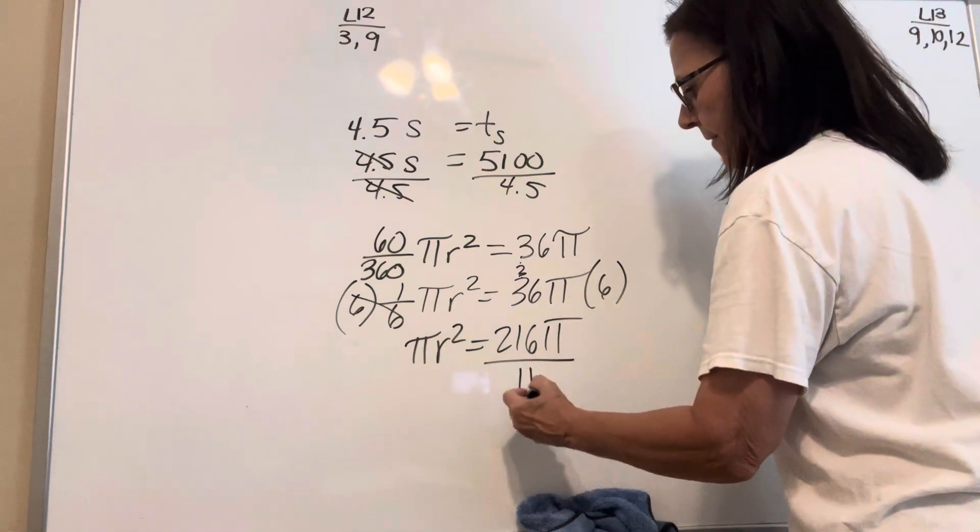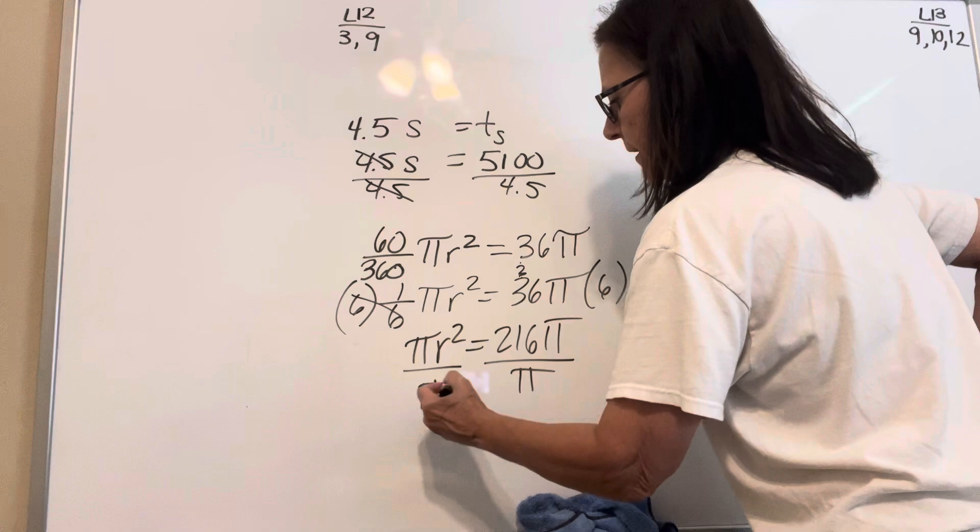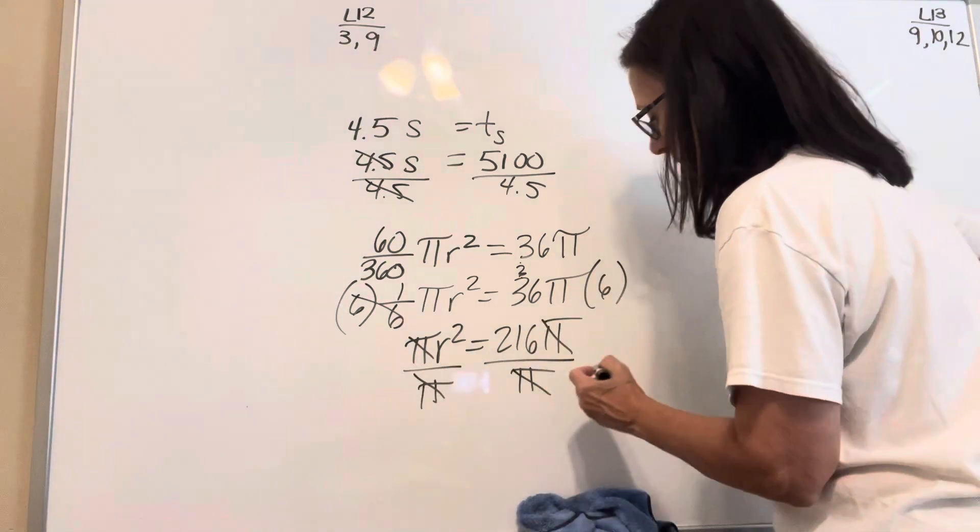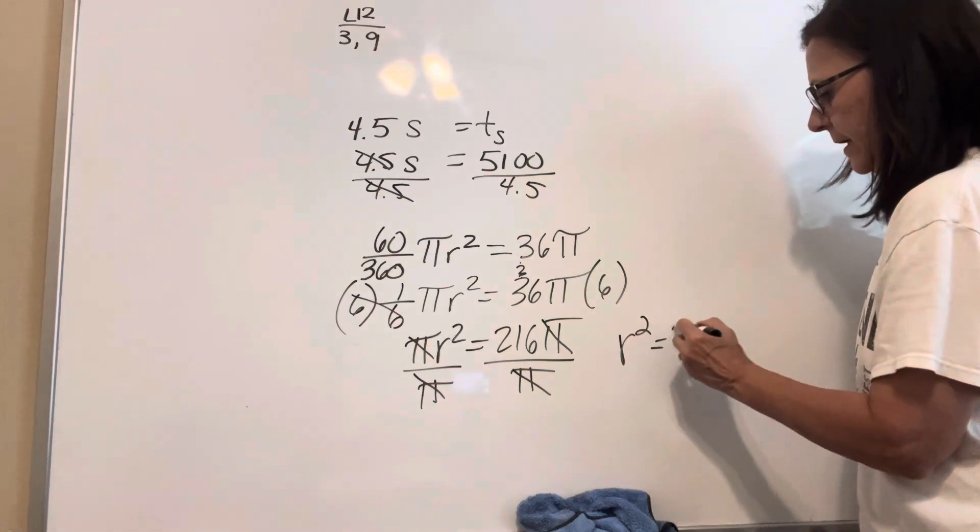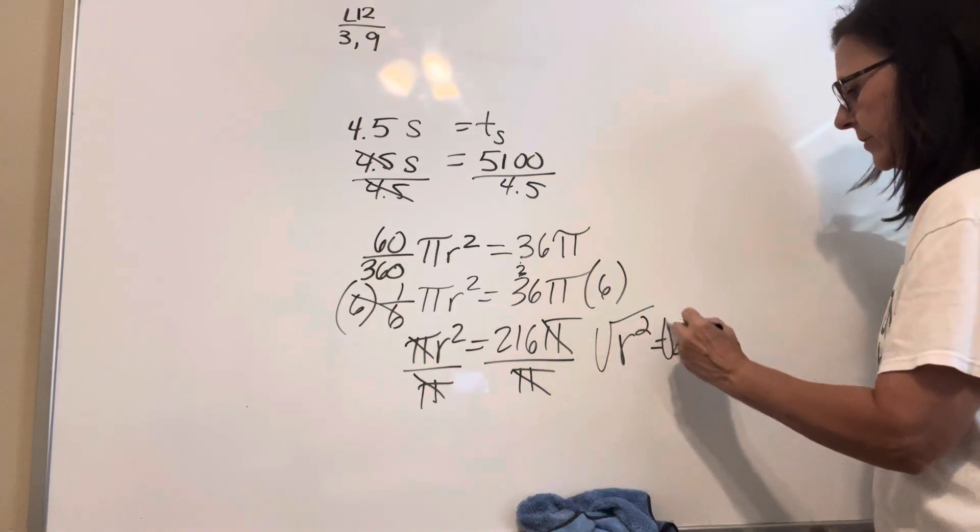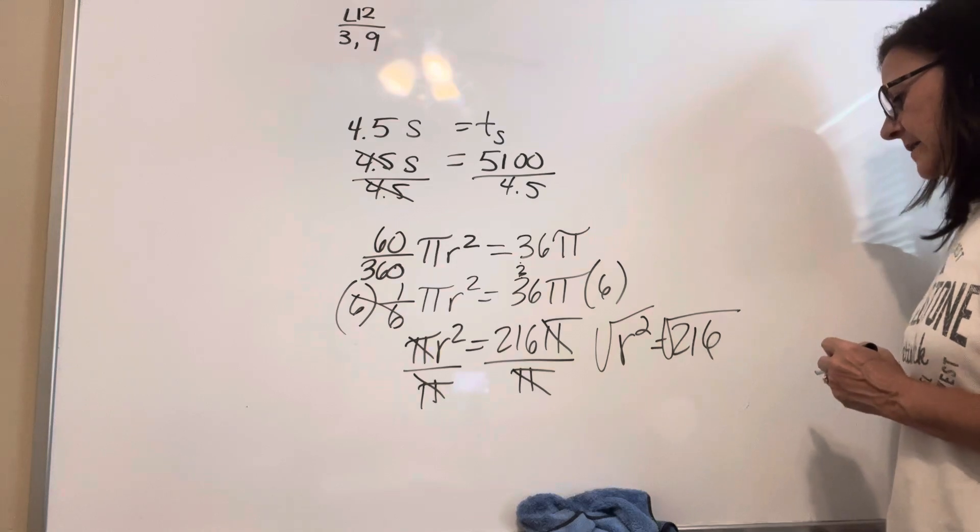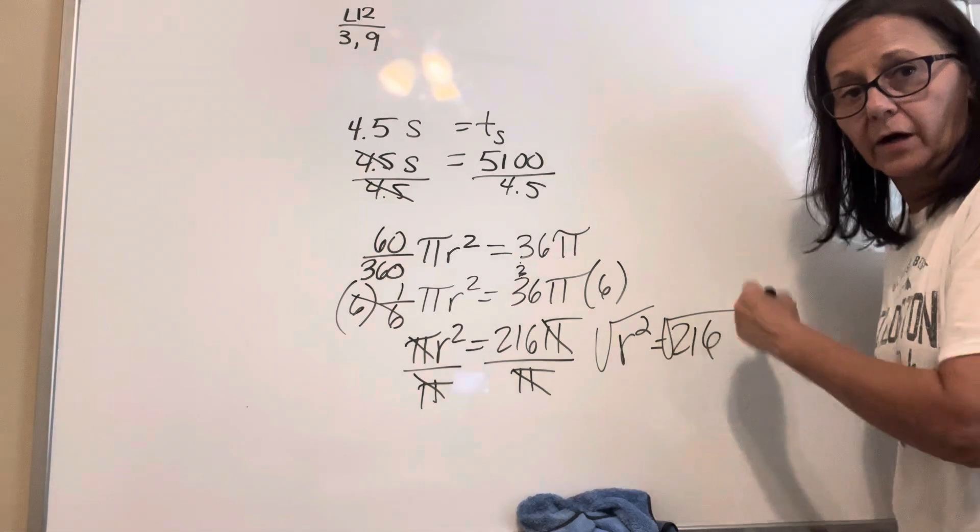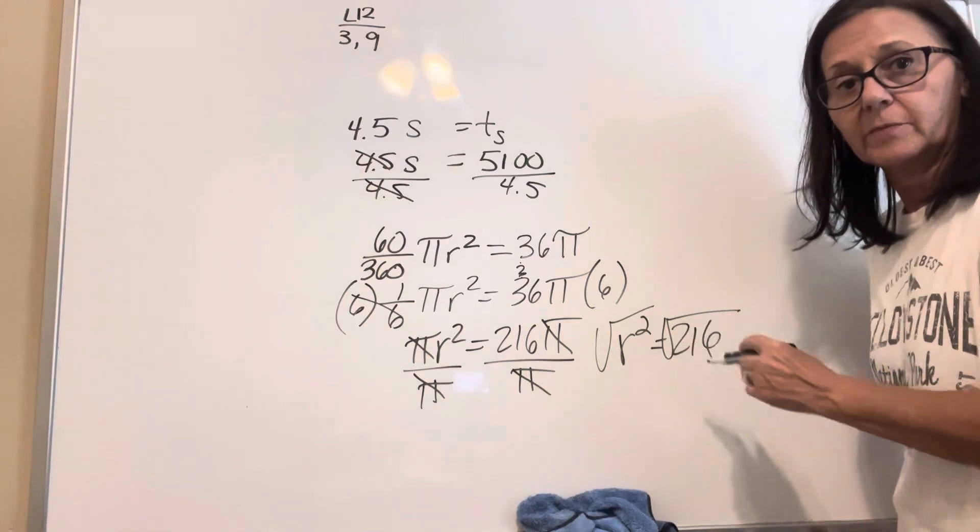Then I would divide by pi, and that eliminates the pi. So the radius squared is 216. Take the square root of that. I don't know what that is. And you get r. And then you just multiply it by 2.